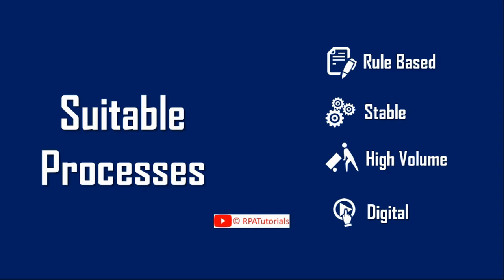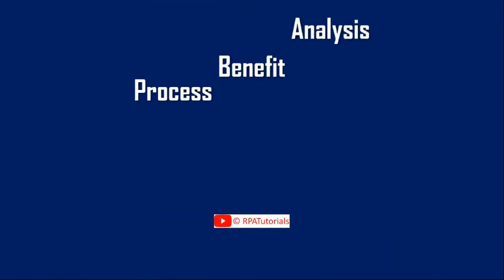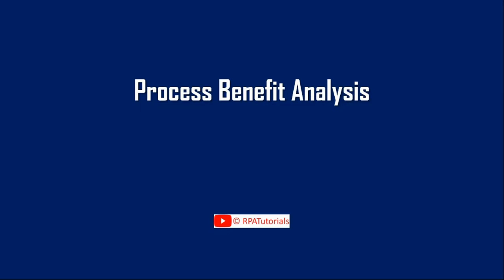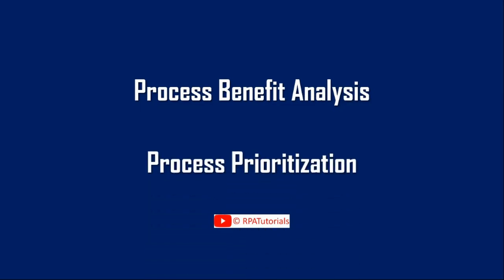Once you have shortlisted suitable processes, the next step is to select which ones to automate. The process selection stage consists of two steps: process benefit analysis and process prioritization.